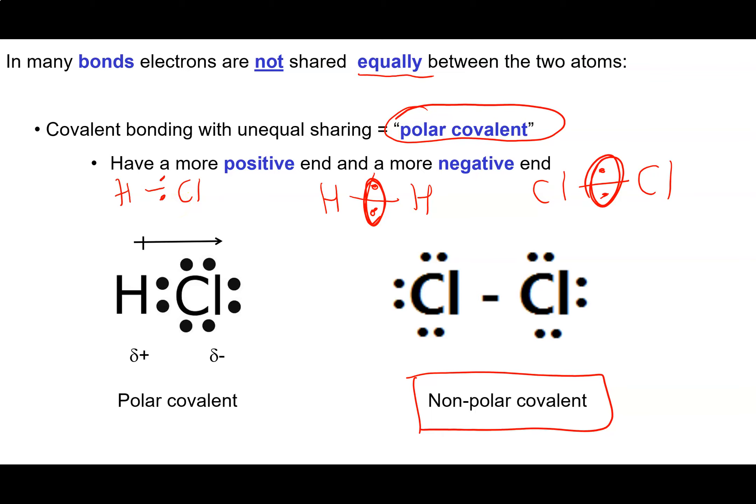Electrons are negative and this gives a negative end to the bond that's closer to the chlorine. So we can indicate this in a couple of ways. One is we can use this delta notation where we indicate the negative end of the bond with a delta minus and the positive end of the bond with a delta plus.